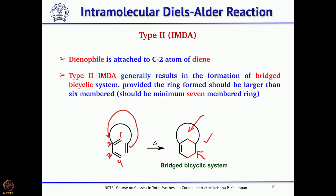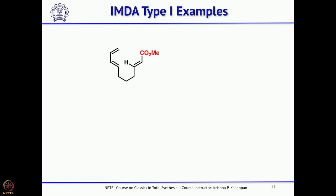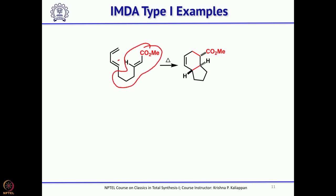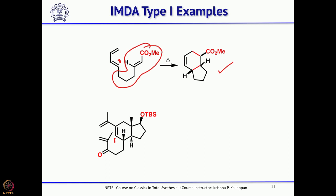The reaction Chapman used in the synthesis of carpanone is IMDA type 1, because that gives a fused bicyclic system. For IMDA type 1, here are a couple of examples. You can see the dienophile unit is attached to carbon number 1, and it undergoes intramolecular Diels-Alder to give a fused bicyclic system. In a more complicated system, the dienophile is also attached to carbon number 1 and again gives the fused system.